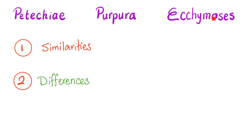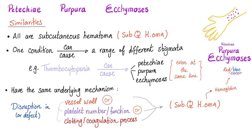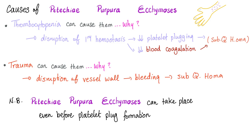Petechiae, purpura, and ecchymosis — let's talk about similarities first, then the differences. All of them are subcutaneous hematomas. One condition can lead to all of them. They have the same underlying mechanism, which is a disruption in the vessel wall, platelet, or coagulation. Causes include thrombocytopenia — disruption in primary hemostasis — and trauma, which causes disruption in the vessel wall.